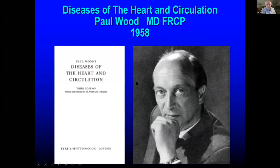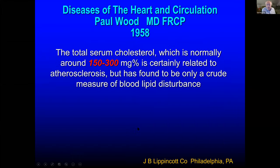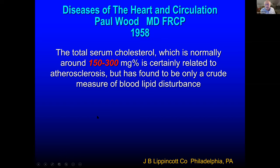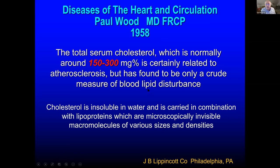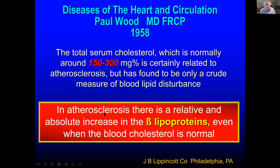Here's a guy who was around even before me — a world-famous cardiologist from England, Paul Wood. In his classic textbook, what I'm about to teach you today was not discovered yesterday. He said in 1958: the total serum cholesterol, which is normally around 150 to 300 milligrams per deciliter, is certainly related to atherosclerosis, but at best is only a crude blood disturbance. Cholesterol is insoluble in water and is carried in combination with lipoproteins, which are invisible macromolecules of various sizes and densities. If you walk out of here and you understand that atherogenesis is mediated by the beta lipoproteins — whatever they are — that's what you need to know. You have to know how to recognize beta lipoproteins and how to modulate them, no matter what your cholesterol metrics are in the blood.